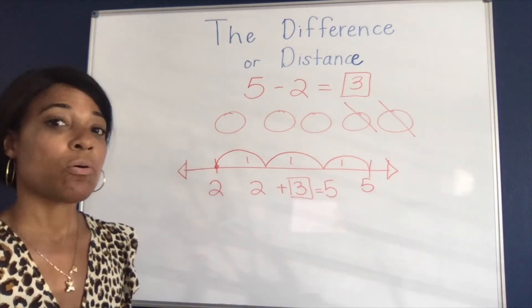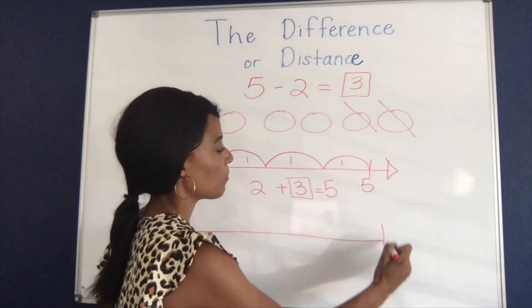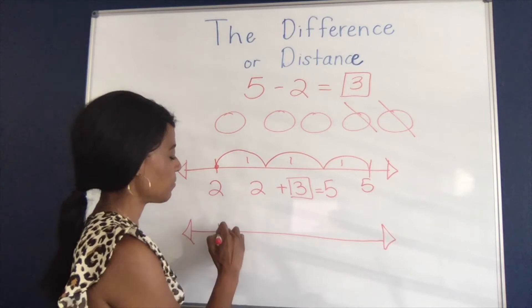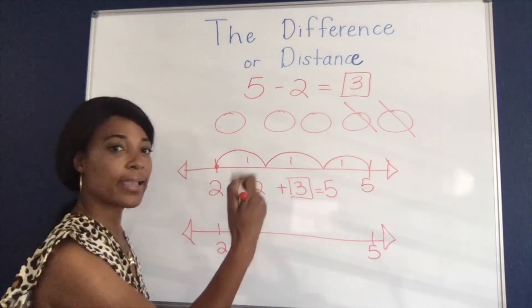But you could also count back on a number line. So that would look like this. For some students they would place their two on the left, their five on the right and then count down.